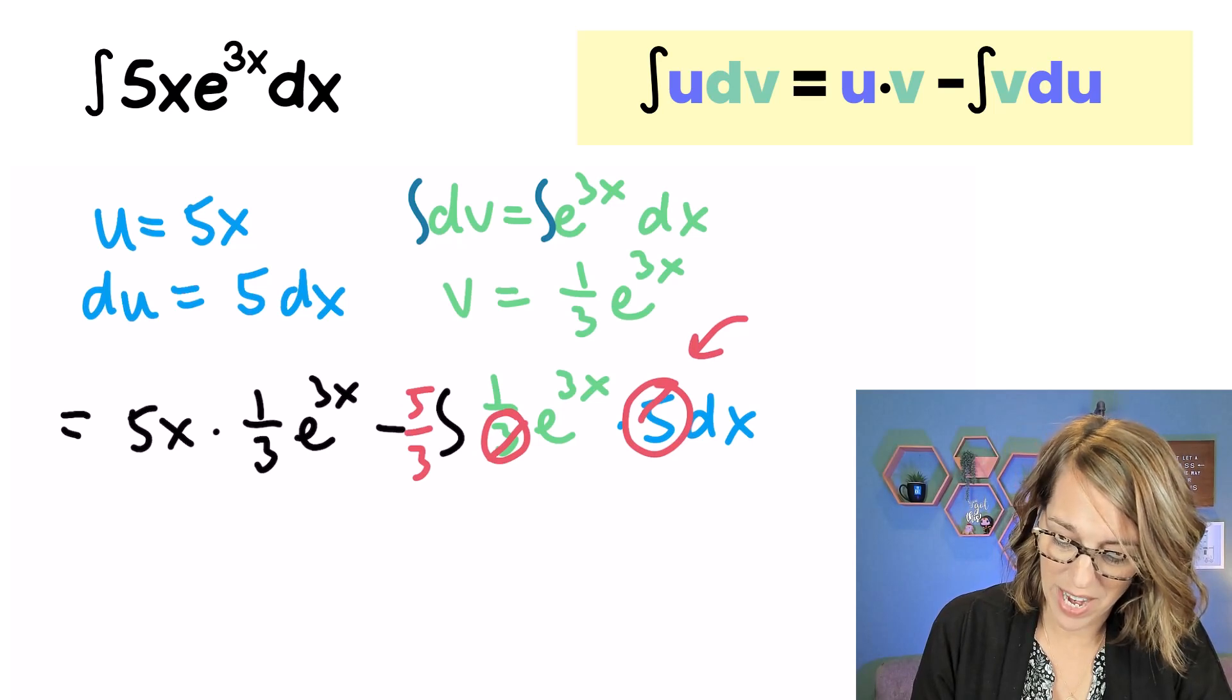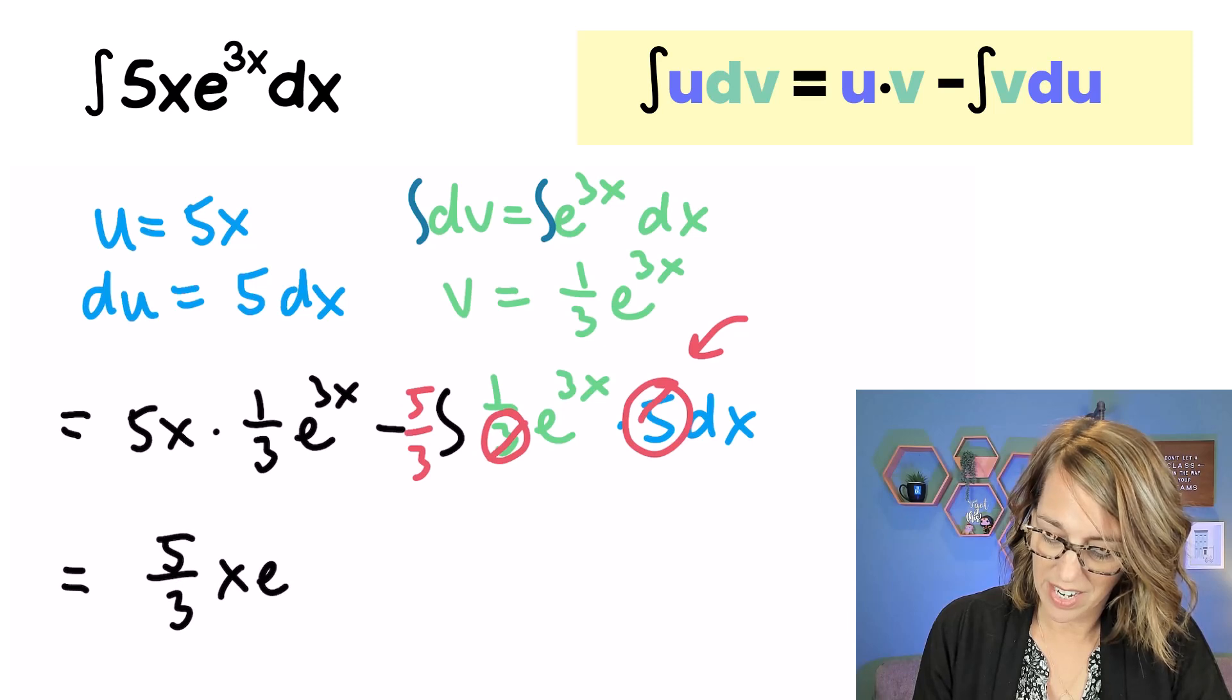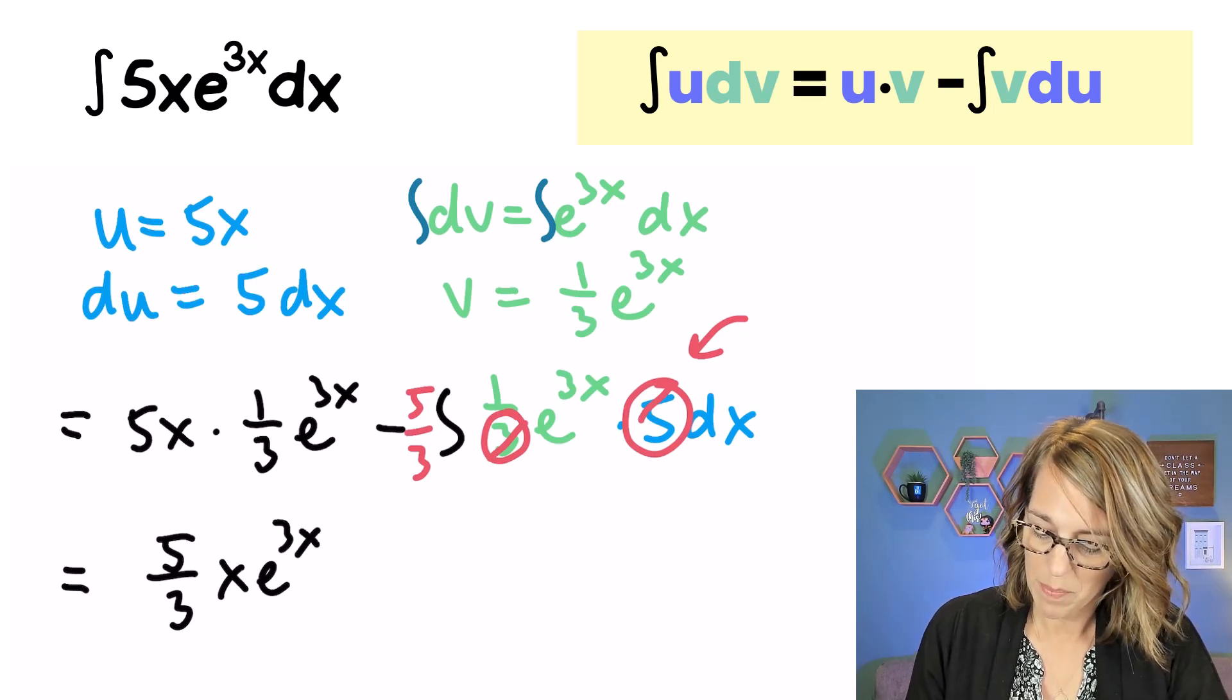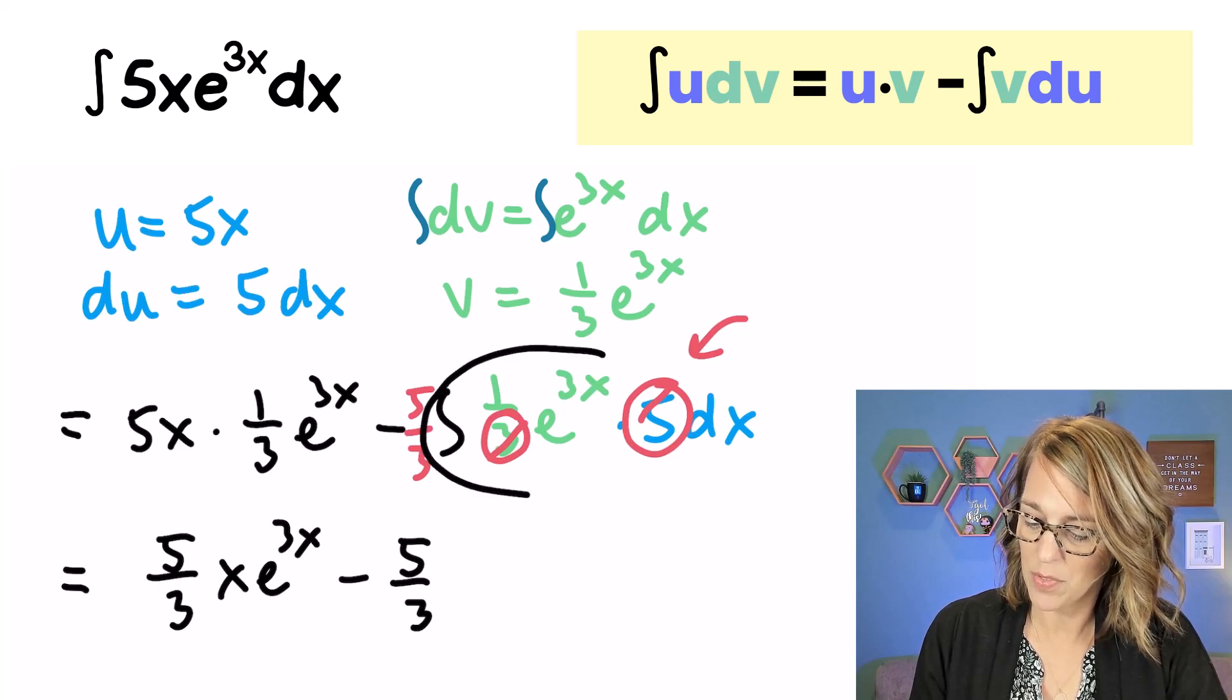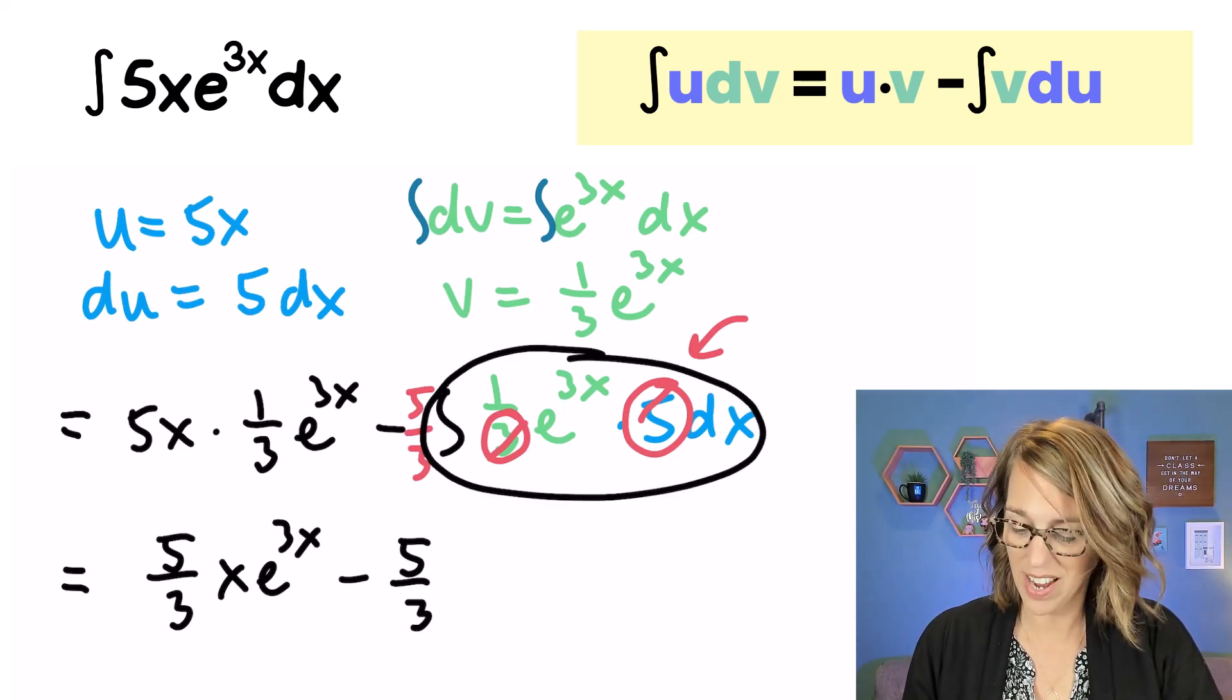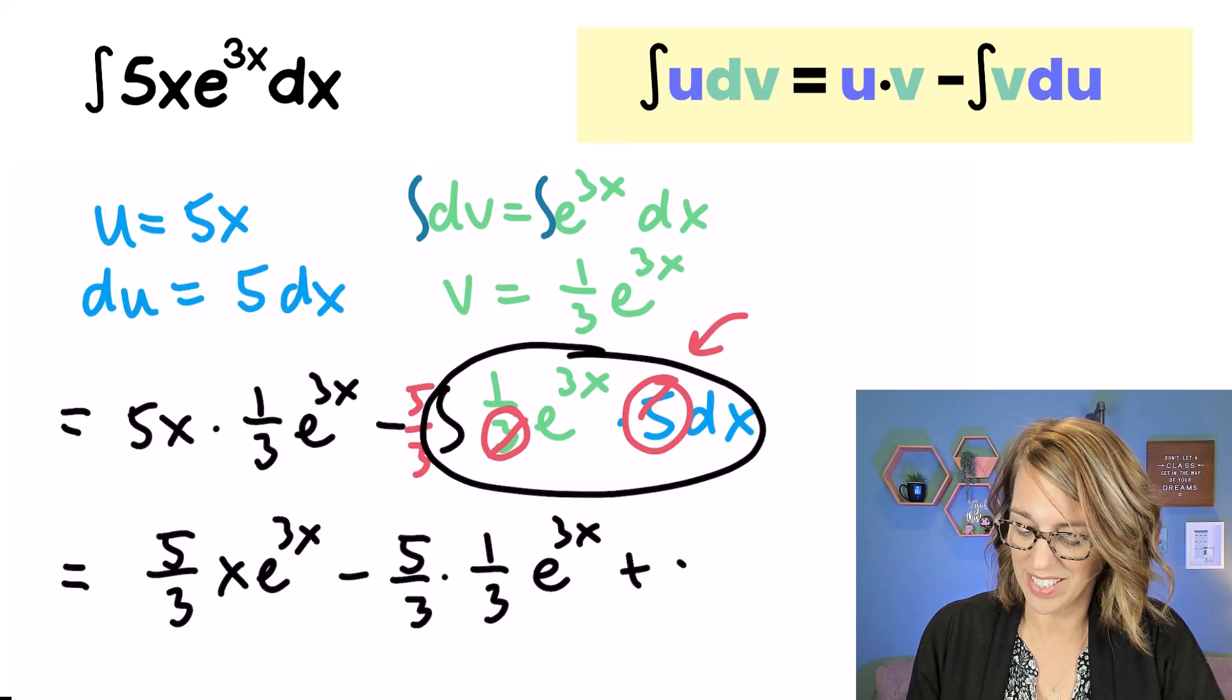And I'm going to have my answer. Over here, I get a 5 over 3x e to the 3x minus, I had that 5 thirds, and I'm ready to find the antiderivative of e to the 3x. We end up with, we've done this, right? I get a 1 third e to the 3x plus c.